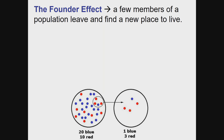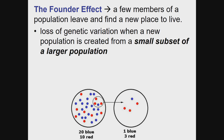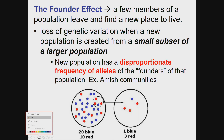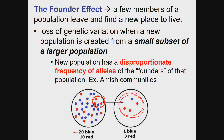The founder effect is the first type of genetic drift, where a few members of a population leave and found a new place to live — they are the founders of the new population. There is a loss of genetic variation when this new population is created from a small subset of a larger population. The new population has a disproportionate frequency of alleles. For example, if the original population had mostly blue individuals but three of those who left were red, the new population will be mostly red — a significantly different allele frequency than the original.